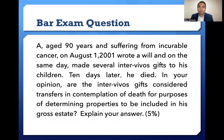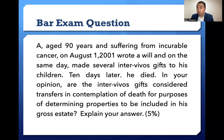Bar exam question: A is 90 years old and suffering from incurable cancer. On August 1, he wrote a will, and on the same day made several inter vivos gifts to his children. Ten days later, he died. Are the inter vivos gifts considered transfers in contemplation of death for purposes of determining properties to be included in his gross estate? The suggested answer is yes — it was a transfer in contemplation of death, the purpose of which was to evade payment of tax. The transfer was made when he was already suffering from an incurable disease, and it was made concurrent with the making of a will. Such circumstances are indicative that the transfer was made in contemplation of death.